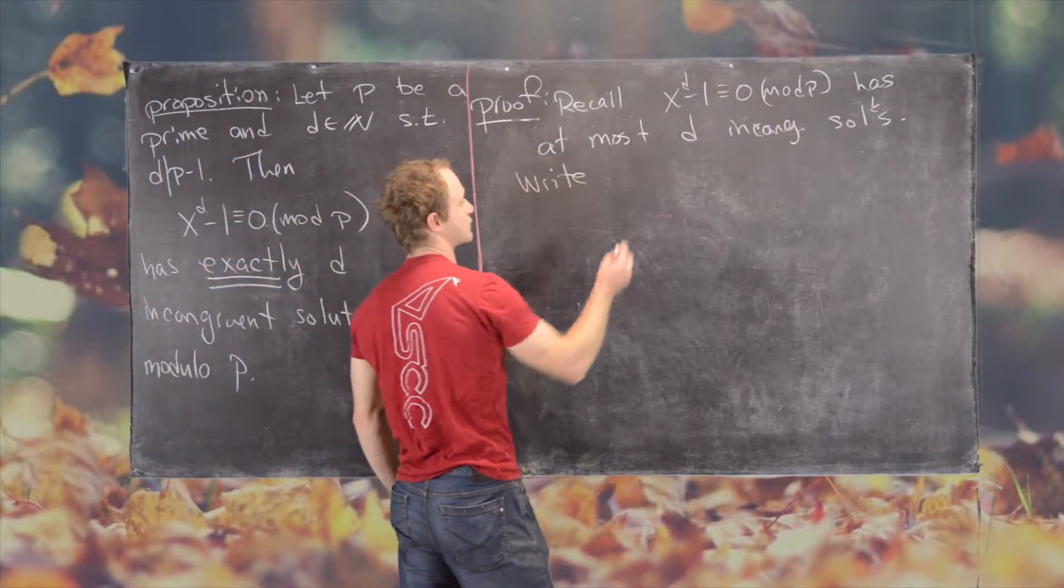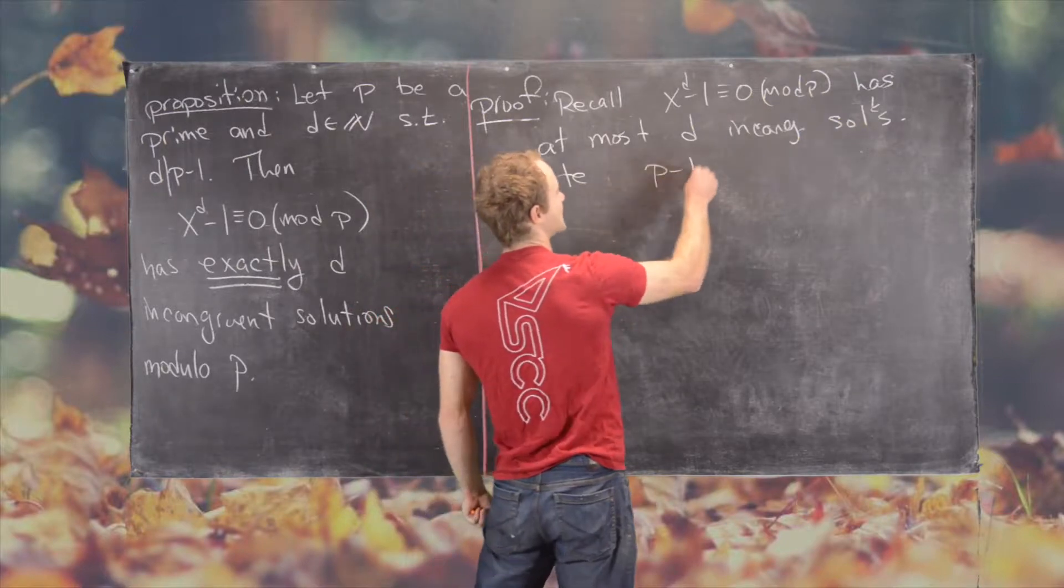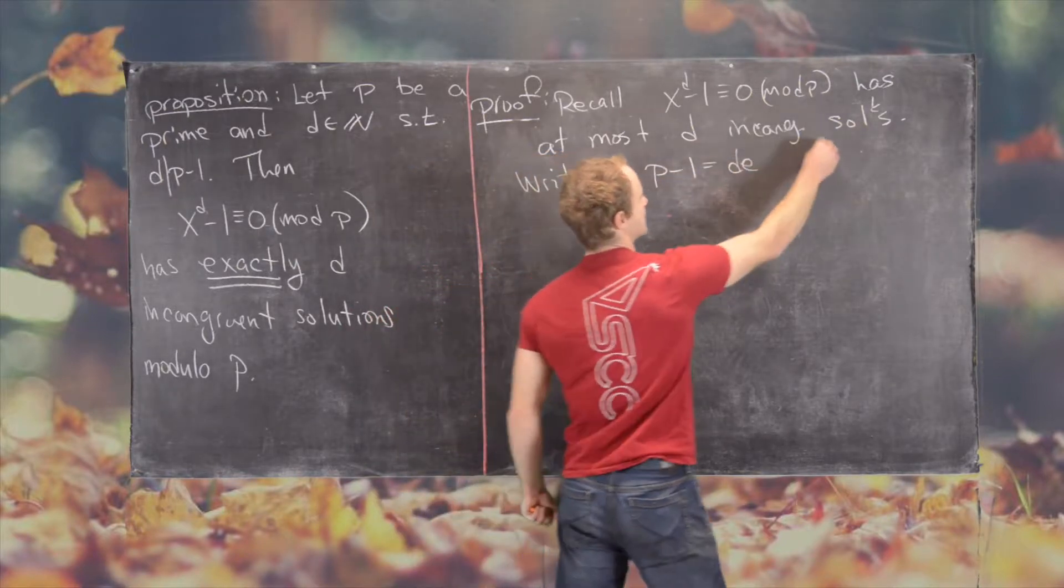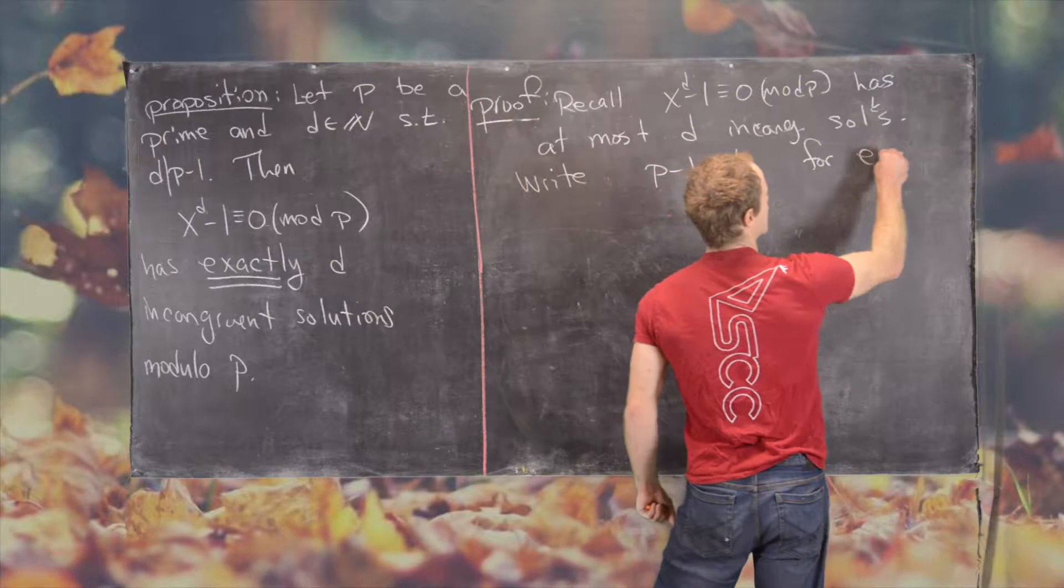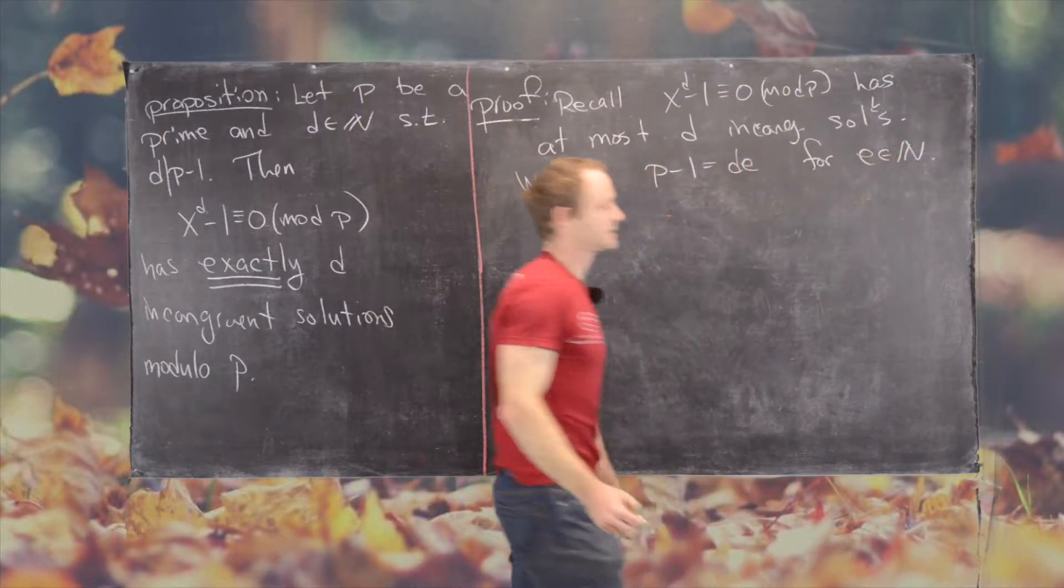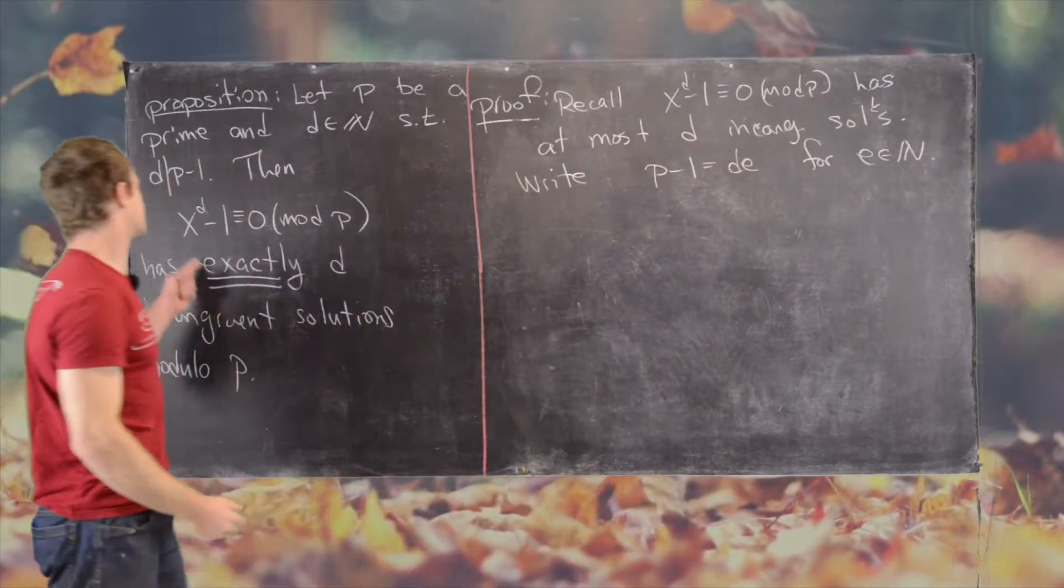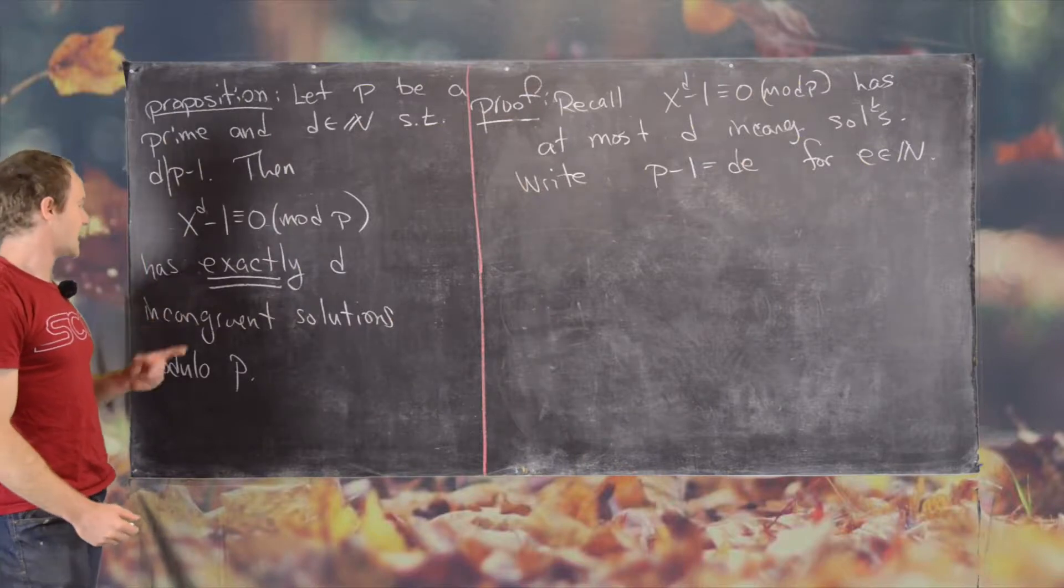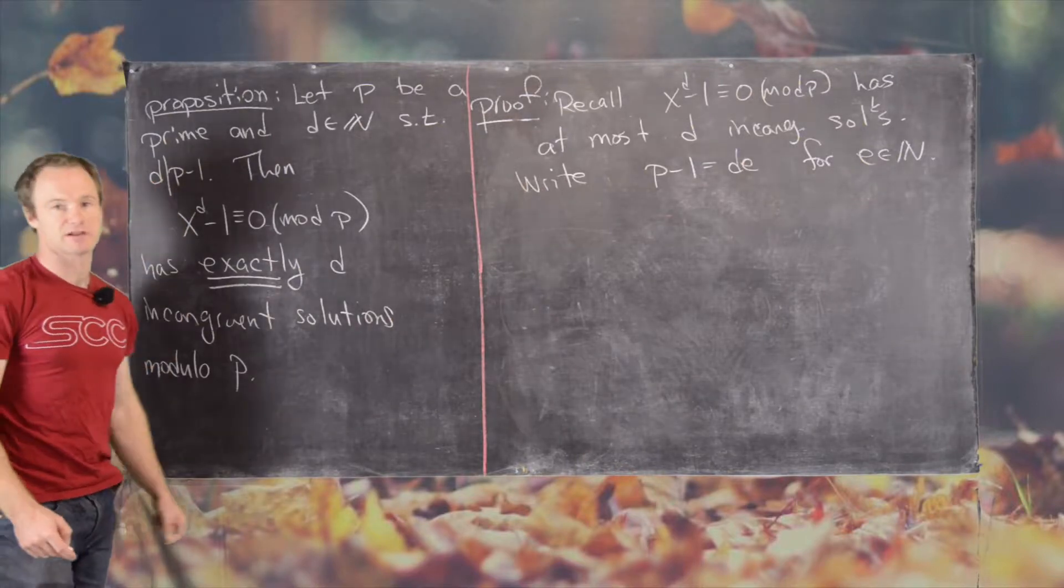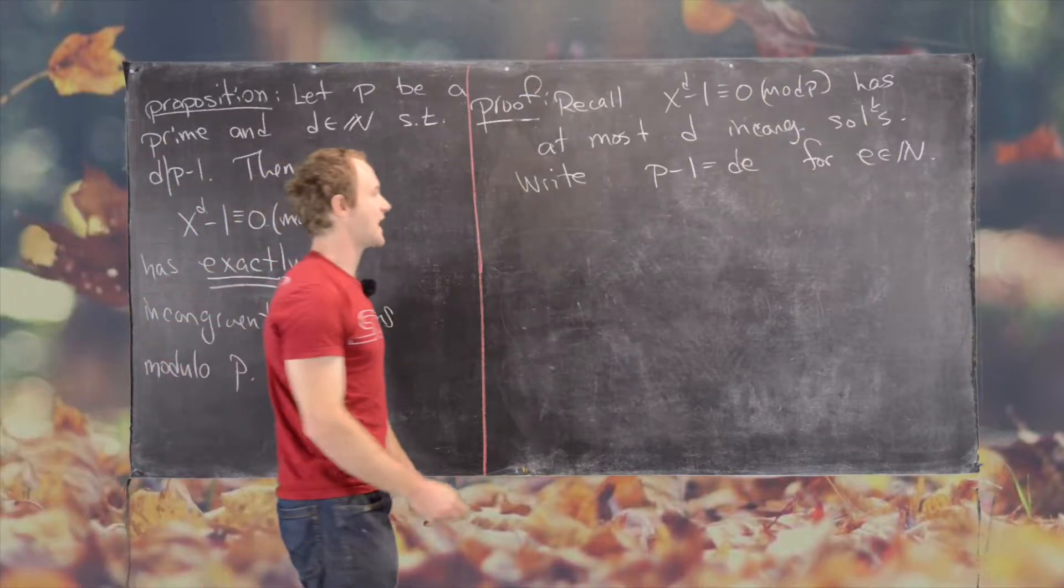So let's write p minus 1 equals d times e for some natural number e. We know we can do that because we have an assumption that d divides p minus 1. And now we're going to factor the following.